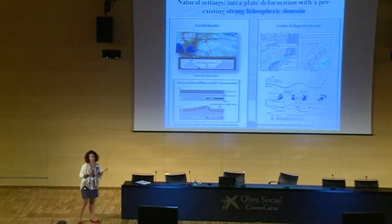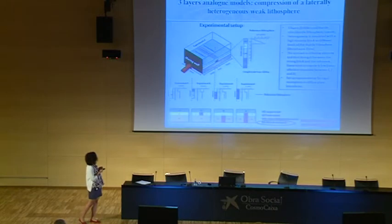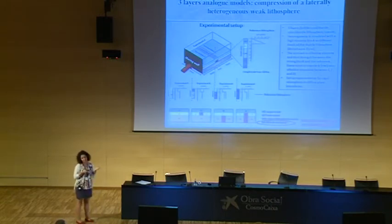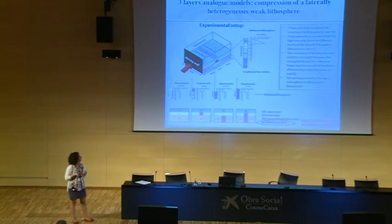We designed a series of analog models to investigate many parameters that can play a role in strain localization. This lateral variation can occur in both a crème brûlée type of lithosphere — very weak lower crust and mantle, with strength mainly residing in the upper crust — or a jelly sandwich type of lithosphere.